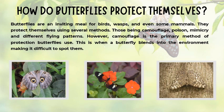How do butterflies protect themselves? Butterflies are an inviting meal for birds, wasps, and even some mammals. They protect themselves using several different methods: camouflage, poison, mimicry, and different flying patterns. Camouflage is the primary method of protection butterflies use — when a butterfly blends into the environment, it makes it difficult to spot them.